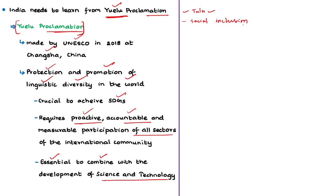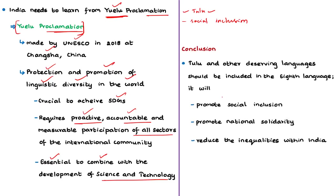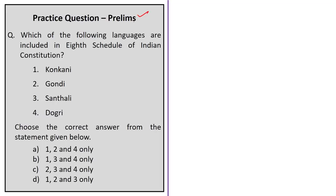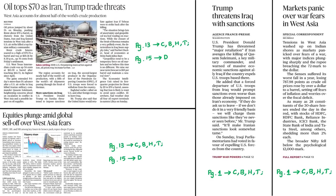To conclude this editorial, we saw about the Eighth Schedule, then about Articles 343 and 351, then about the points discussed by the author to include Tulu and other deserving languages in the Eighth Schedule, and finally about the Yulu Proclamation made by UNESCO in 2018. With this we have come to the end of analysis of this news article. The displayed practice question will be discussed at the end of the session. Now let us proceed to the analysis of the next news article.